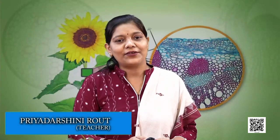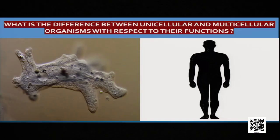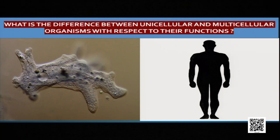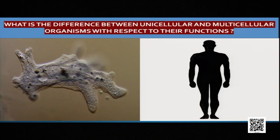Hello everyone, dear students. All of you are aware about different types of organisms found on this earth. In this picture you are able to see two different organisms, and I am sure you can identify them. One is a unicellular organism — amoeba — and the second is a multicellular organism — human being. But can you say what is the difference between unicellular and multicellular organisms with respect to their functions?